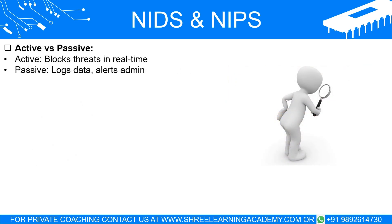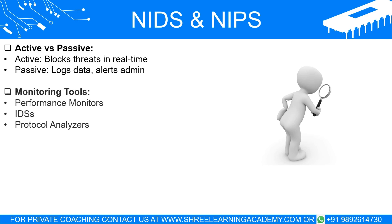Active vs. passive systems — Active IDS/IPS: An active system is like a security guard who immediately reacts to neutralize a threat. For instance, if it detects a malware attack, it will block the malware from entering the system. Passive IDS/IPS: A passive system logs data and alerts administrators. It is more like a security camera that captures footage for later review but doesn't intervene directly.